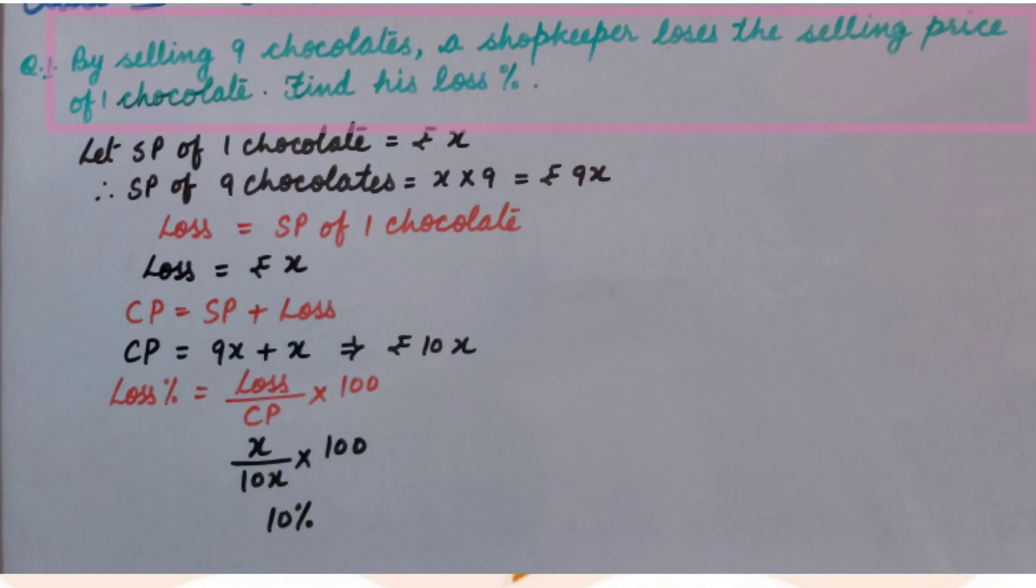By selling 9 chocolates, a shopkeeper loses the selling price of 1 chocolate. Find his loss percent. In the question, neither CP nor SP is given, but it is given that by selling 9 chocolates, he loses the selling price of 1 chocolate.